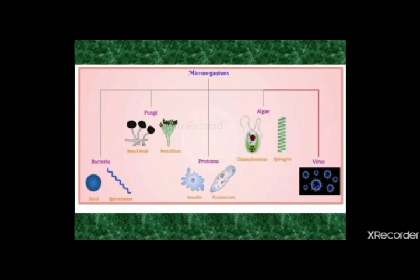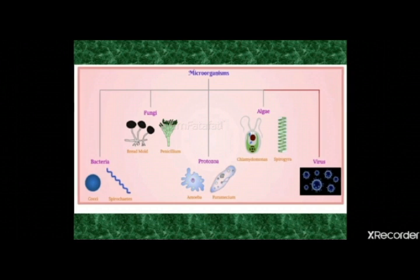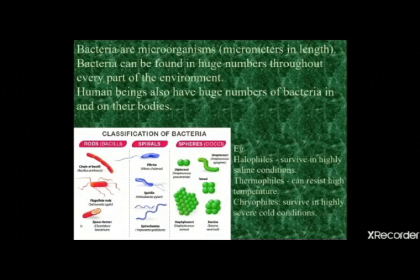Without entering into a host, a virus can't survive at all. So the four main categories are: first, bacteria; second, fungi; third, protozoa; and fourth, algae. These organisms are micrometer in length and are called microorganisms.